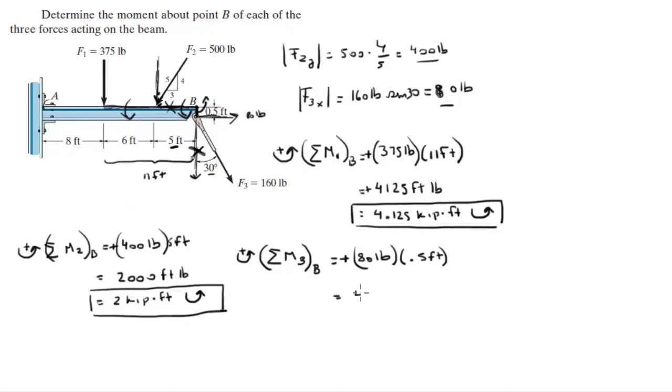So 80 times 0.5 is 40 foot pounds, turning counterclockwise because it's positive.